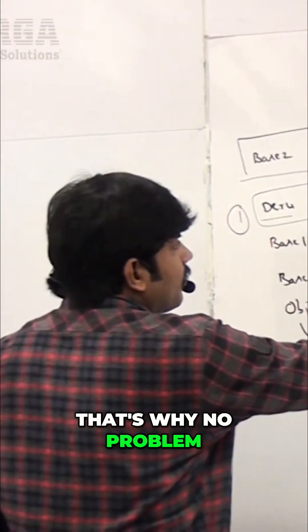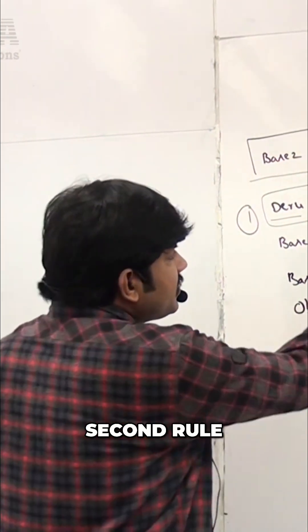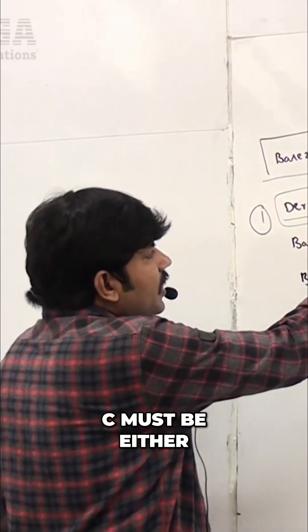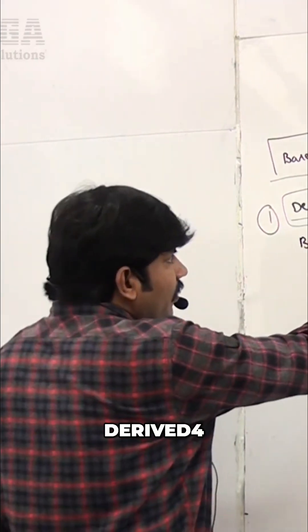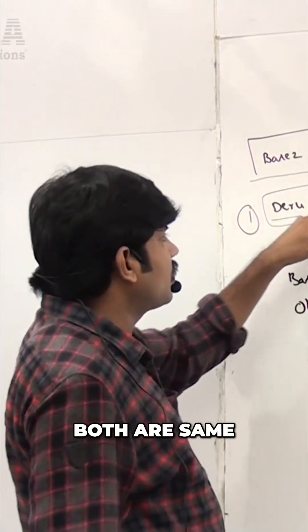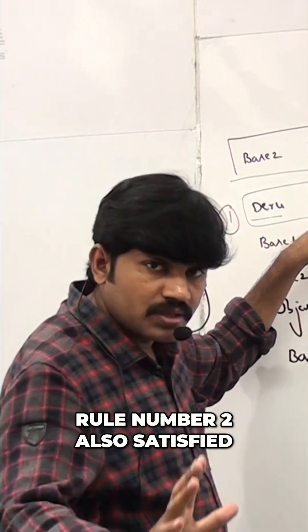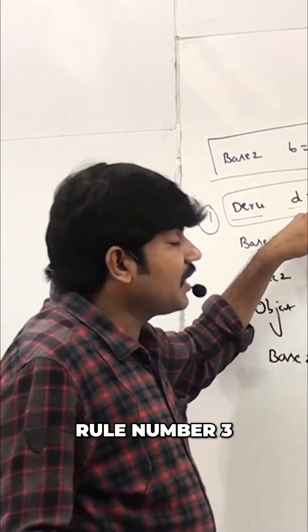no problem, rule 1 satisfied. Second rule: c must be either same as a or it's a child type. Derived of 4, same as derived of 4? Yes, both are same. Rule number 2 also satisfied. Rule number 3: